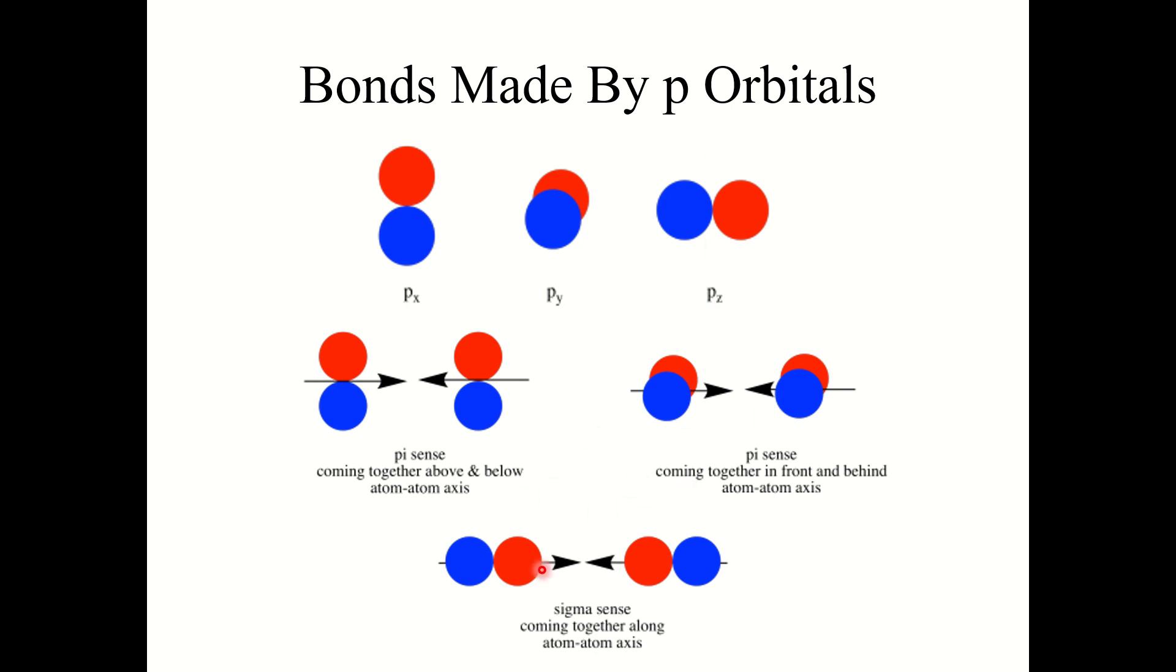Here if we took two of these pz orbitals and we push them together, they are coming together along that internuclear axis. That's end-to-end or head-to-head overlap. This would form a sigma bond.